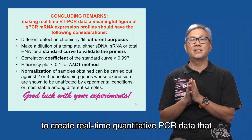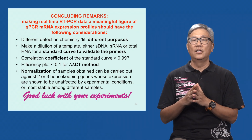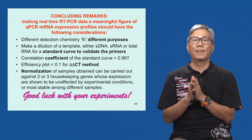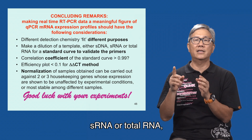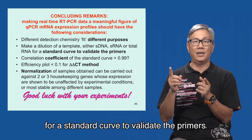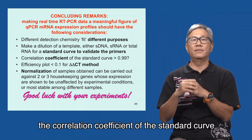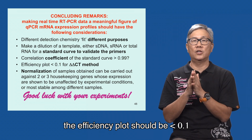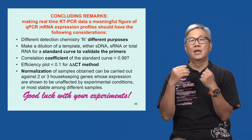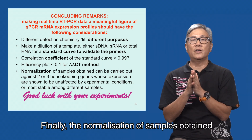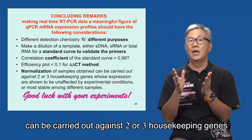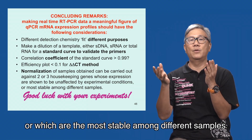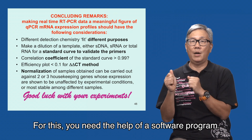To conclude, to create real-time quantitative PCR data that provide meaningful mRNA expression profiles, you need to consider the following. First, select the detection chemistry to fit your purpose. Second, make a dilution of a template — either cDNA, cRNA, or total RNA — for a standard curve to validate the primers. The correlation coefficient of the standard curve for each gene should be greater than 0.99. Fourth, the efficiency plot should be lower than 0.1 for the delta-delta CT method compared against the reference gene for validation. Finally, the normalization of samples obtained can be carried out against two or three housekeeping genes whose expressions are shown to be unaffected by experimental conditions or which are the most stable among different samples — for this, you need the help of a software program.